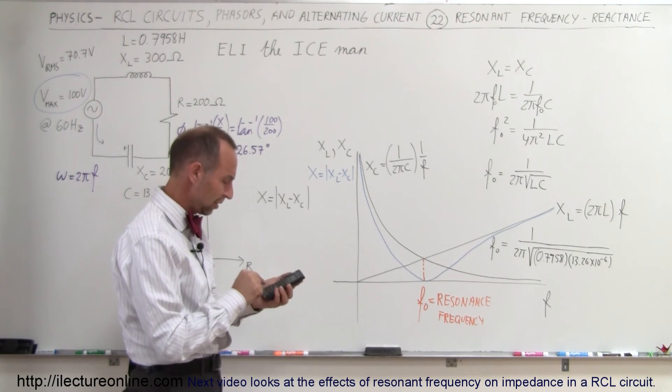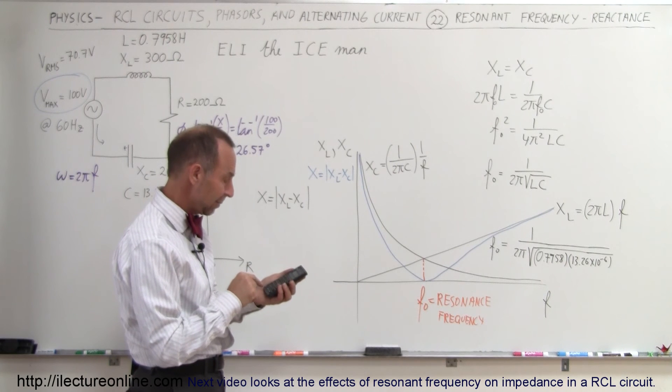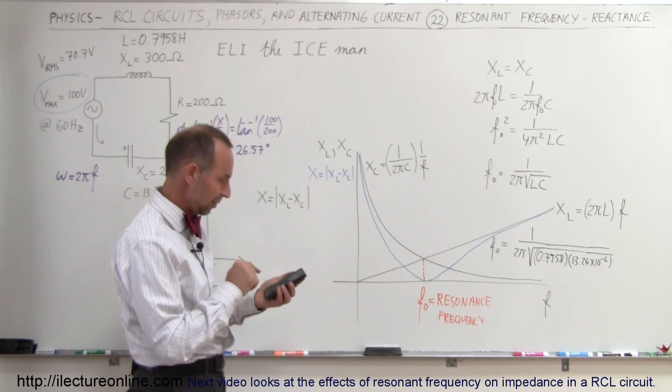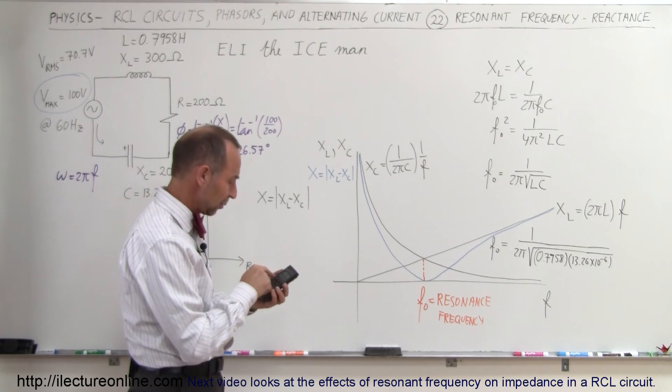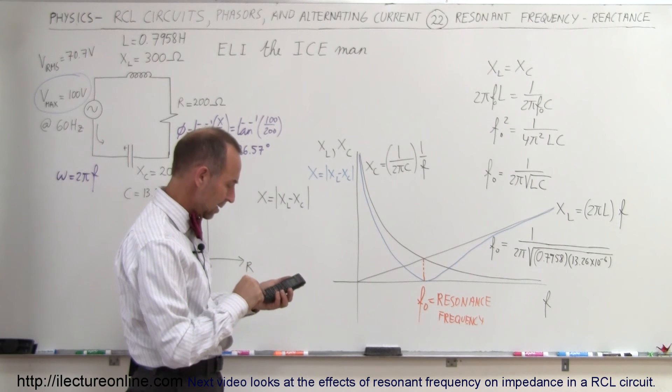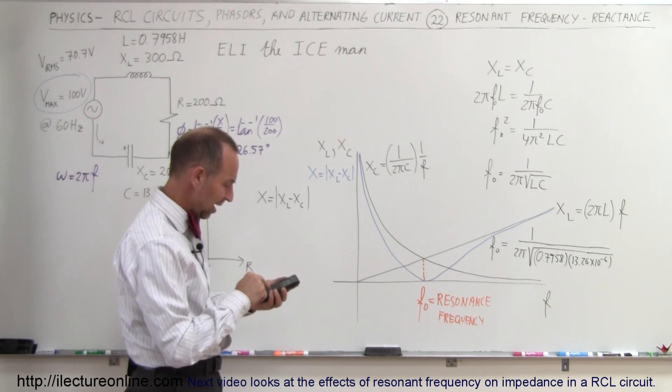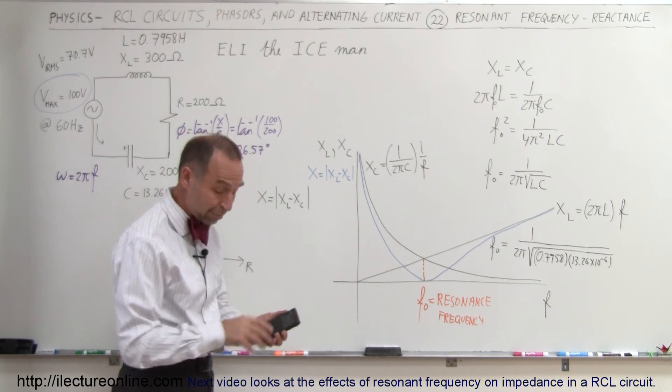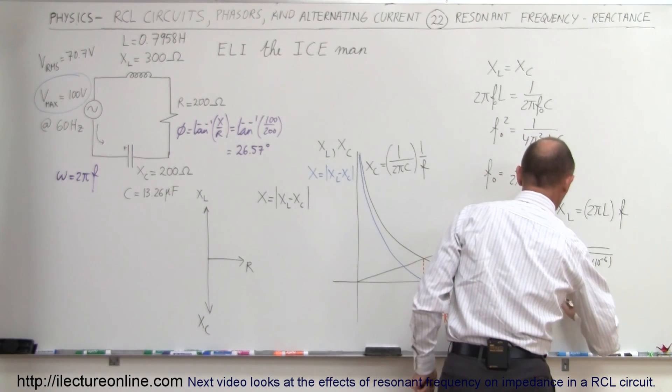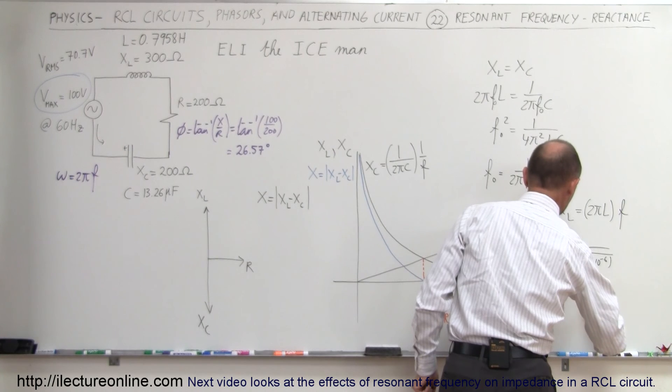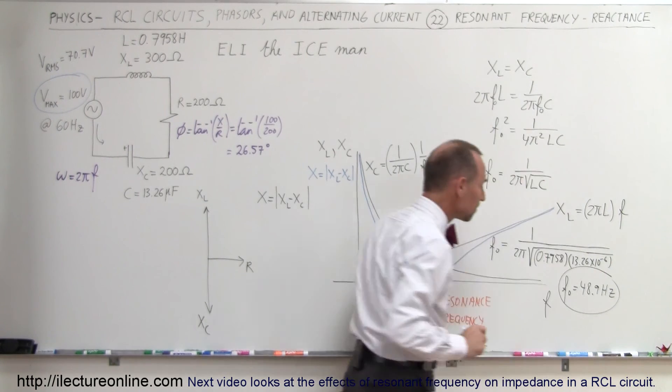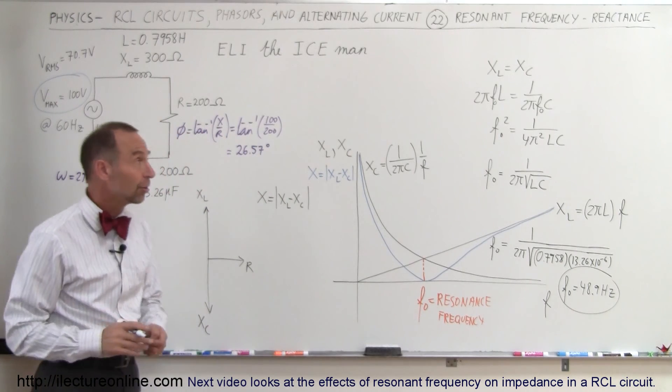13.26 e to the minus 6 times 0.7985 equals—better take the square root of that—times 2 times π, and then take the inverse of that, and we get 48.9. So that means that in this particular example, f sub naught is equal to 48.9 hertz. That's how we do that.